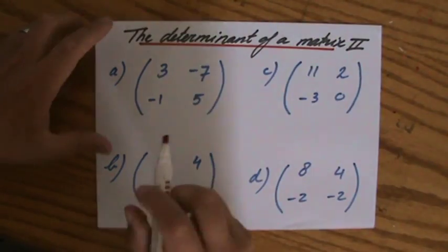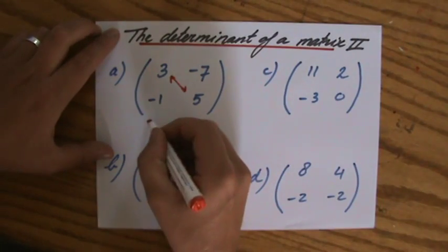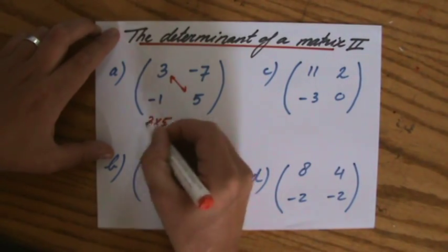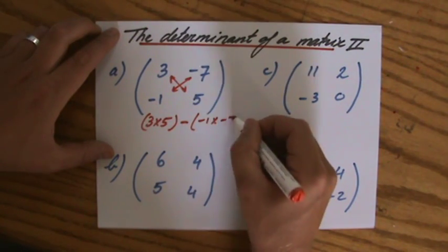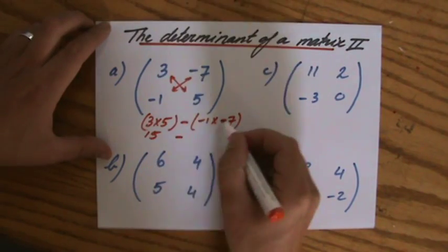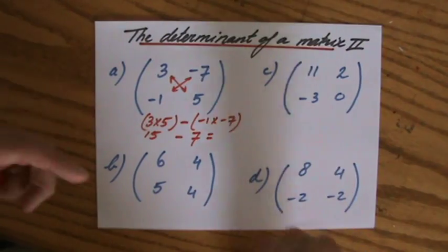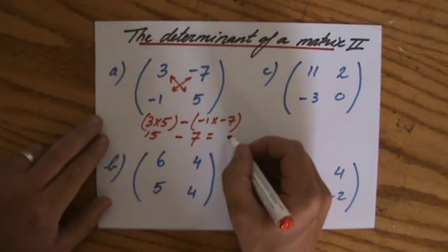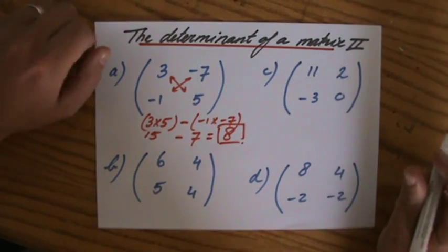So there we go, the first one. The determinant is going to be 3 times 5, minus, and that is minus 1 times minus 7. So that would be 15, take away minus 1 times minus 7 is a positive 7. So 15 minus 7, the determinant is 8. That's for the first one.